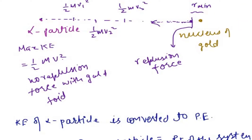The potential energy of the final system is K·Q1·Q2 / R_minimum, where R_minimum is the minimum distance between the charged particles. So we set: half mv² = K·Q1·Q2 / R_minimum. R_minimum approximately equals the nuclear radius of the metal.